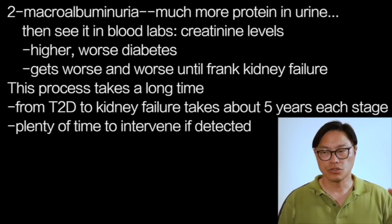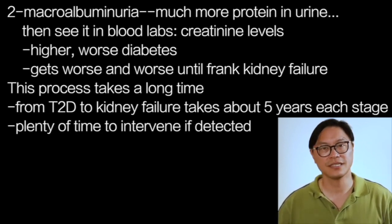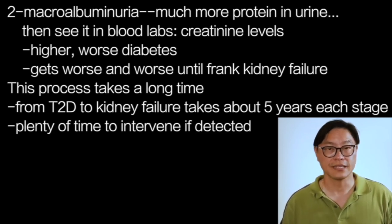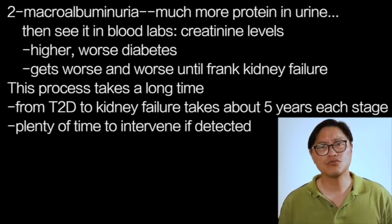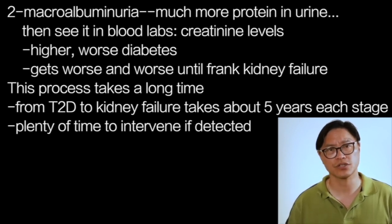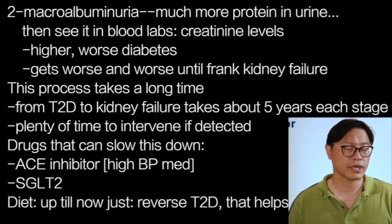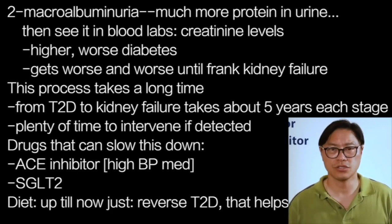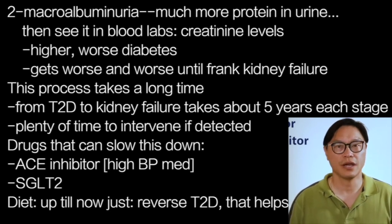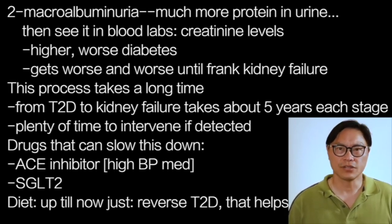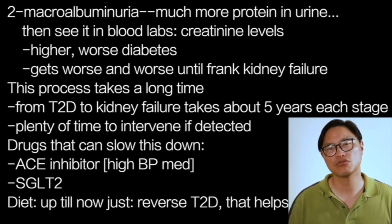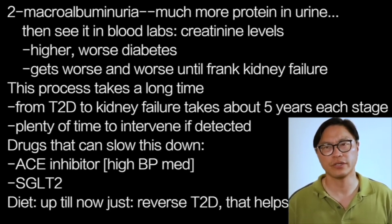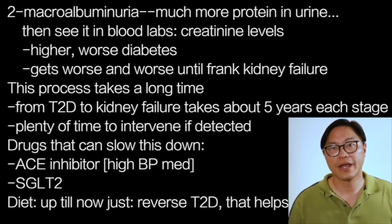This whole process takes a long time — from the development of type 2 diabetes to microalbuminuria to proteinuria to kidney disease to dialysis, each stage takes approximately five years or so. So there's plenty of time to intervene if you detect it. However, there are only a few drugs proven to slow down this progression: ACE inhibitors or angiotensin receptor blockers, which are types of high blood pressure medication, and another medication called an SGLT-2. These certainly have their use in the treatment of diabetic nephropathy. Diet is also very important, but up until now, the best we could say was that if you could use diet to reverse your type 2 diabetes, you're likely not going to develop worsening diabetic kidney disease.